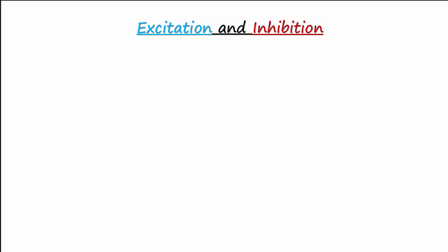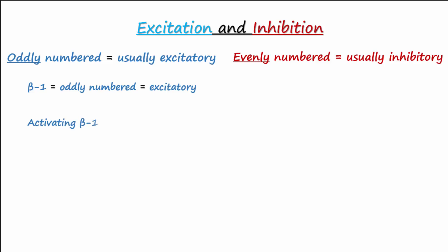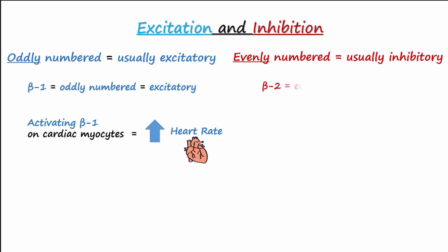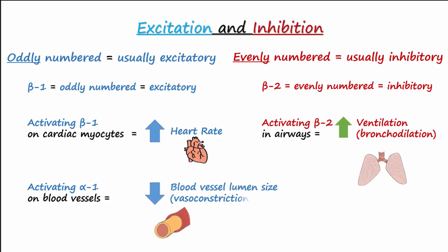To help keep track of receptor actions, remember that oddly numbered subtypes are usually excitatory and evenly numbered are usually inhibitory. For example, beta-1 is odd-numbered and excitatory — activating beta-1 on cardiac myocytes increases heart rate and force of contraction. Beta-2, the predominant adrenergic receptor on airway smooth muscle, causes bronchodilation when activated. Alpha-1, the predominant receptor on vascular smooth muscle, causes an excitatory effect resulting in smooth muscle contraction, vasoconstriction, and an increase in blood pressure.